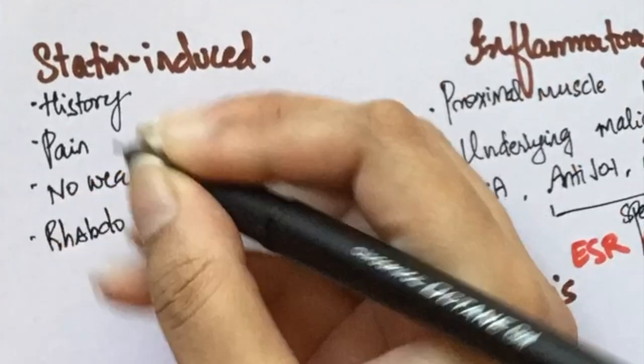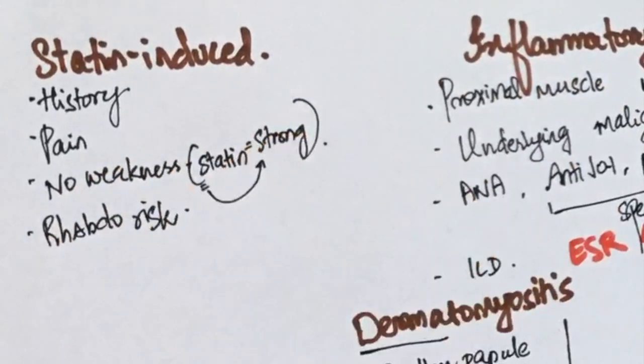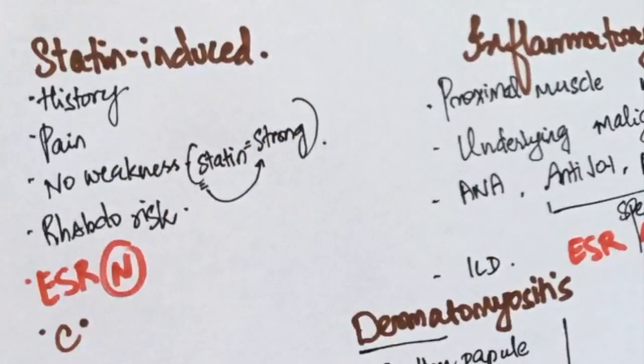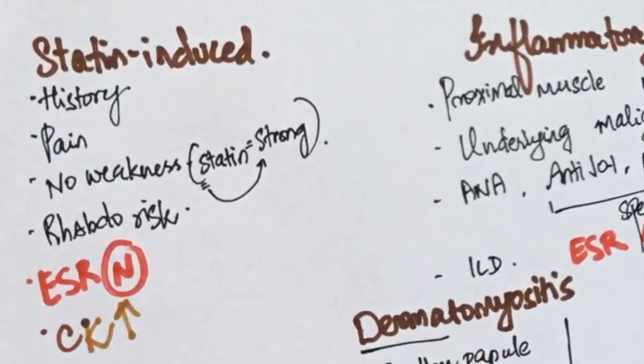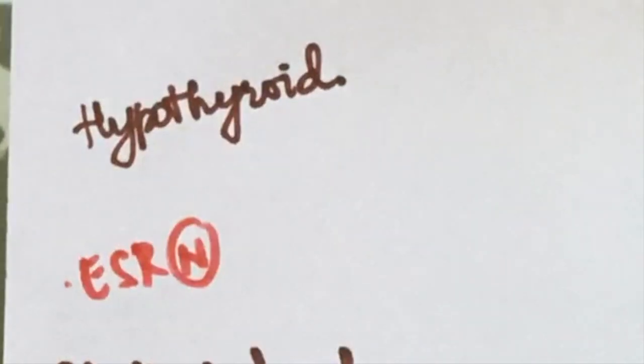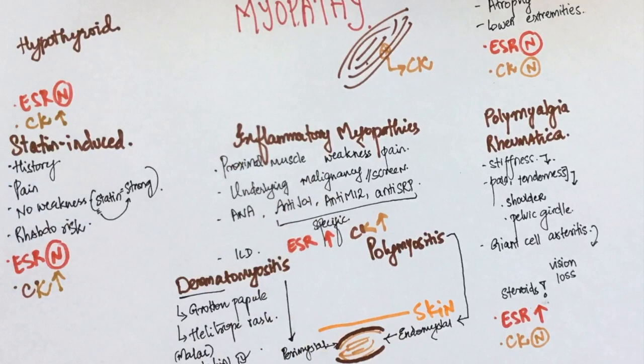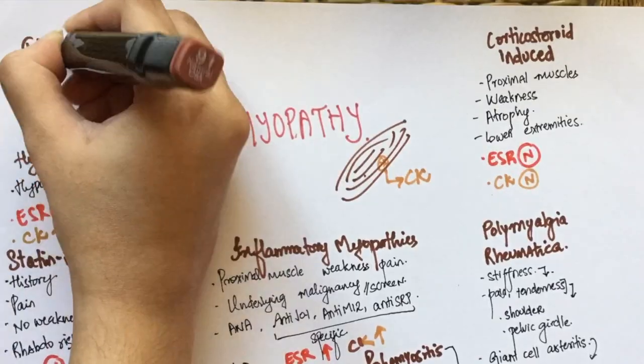I remember statin-induced myopathy by thinking that 'statin' is associated with strength, so there's no weakness. Note that these patients are at risk of rhabdomyolysis. Since there's only muscle damage and no inflammation, the ESR will be normal while CK levels will be high. Similarly, in patients with hypothyroidism the ESR will be normal and CK levels will be high. This can be differentiated from statin-induced myopathy based on the patient's history and the presence of hypothyroid features.